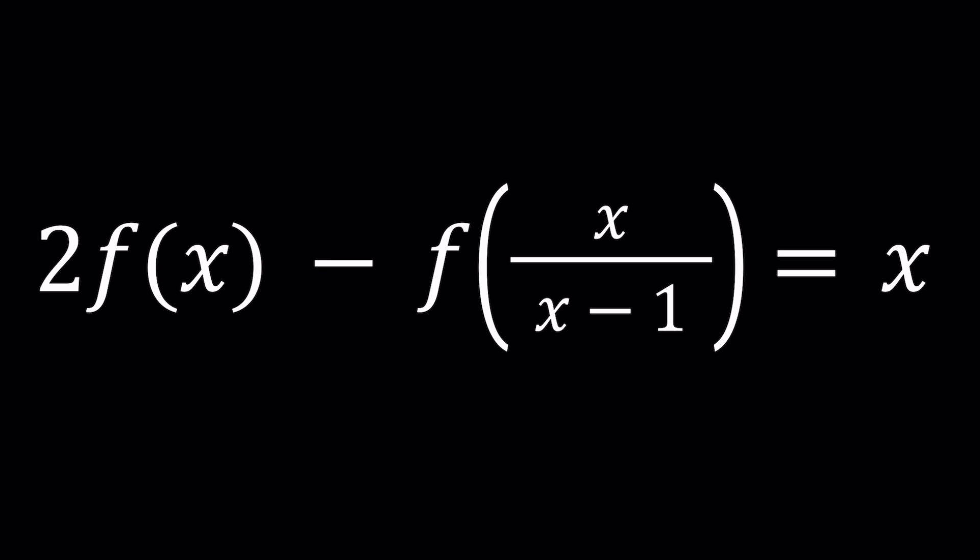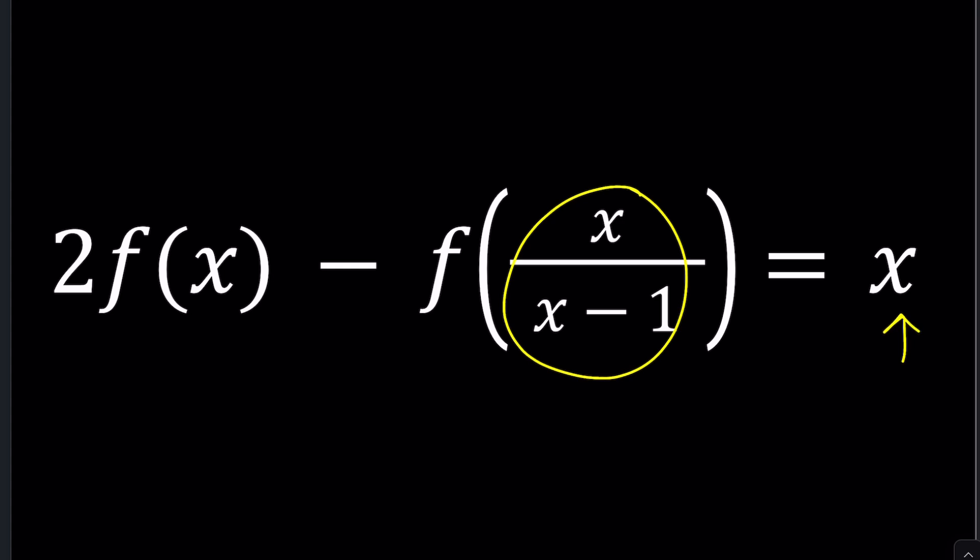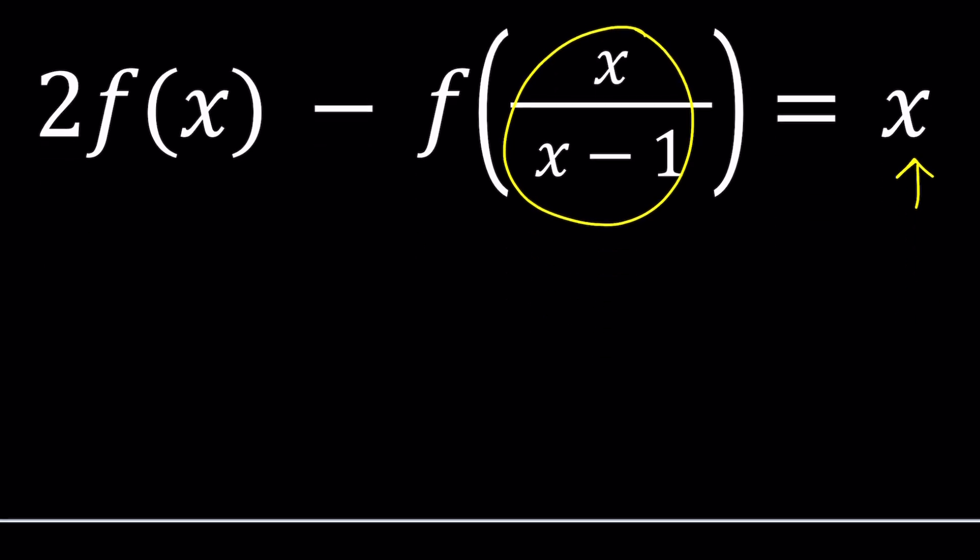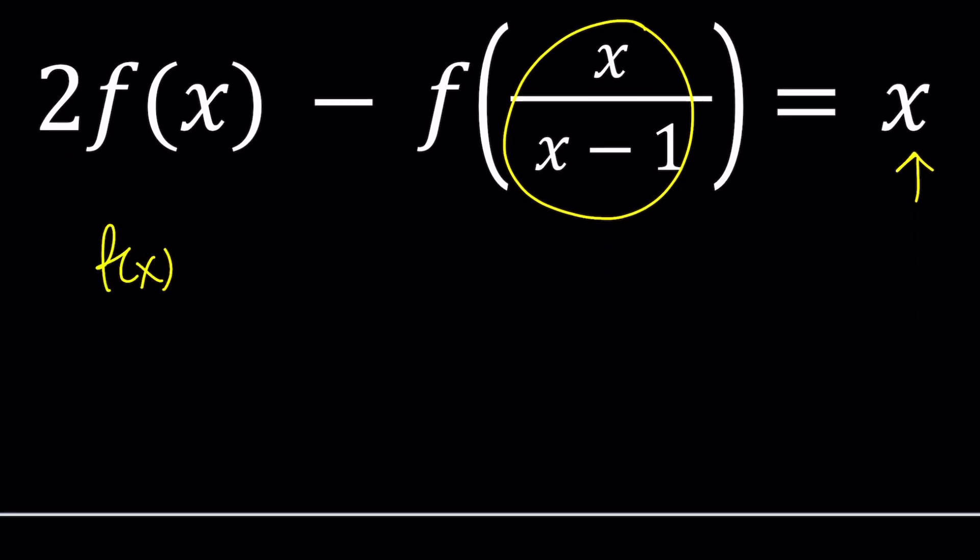Can f be something else? Can it be trigonometric? Can it be something crazy? Exponential? Well here is in my opinion the type of function that fits the most because we have a rational expression here and the answer is linear. I'm going to assume that f is rational which means f of x can be written as ax plus b over cx plus d.